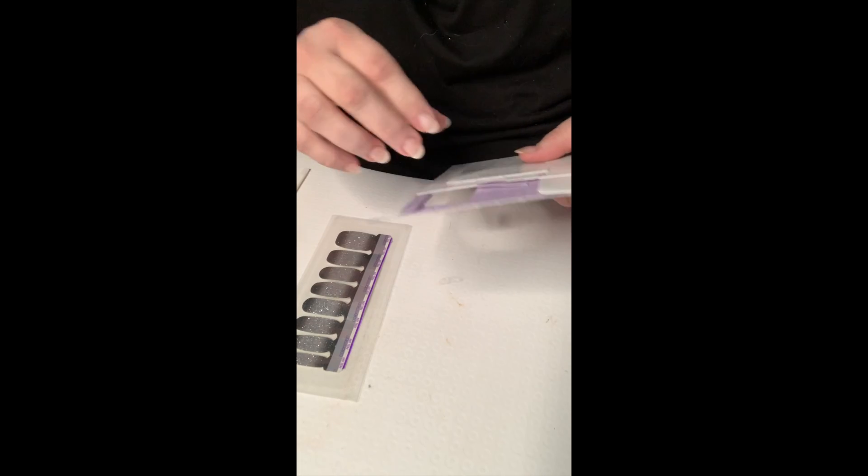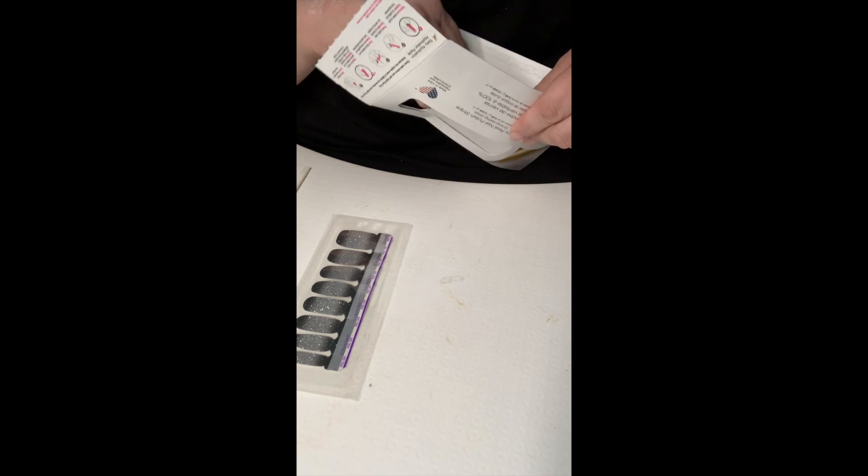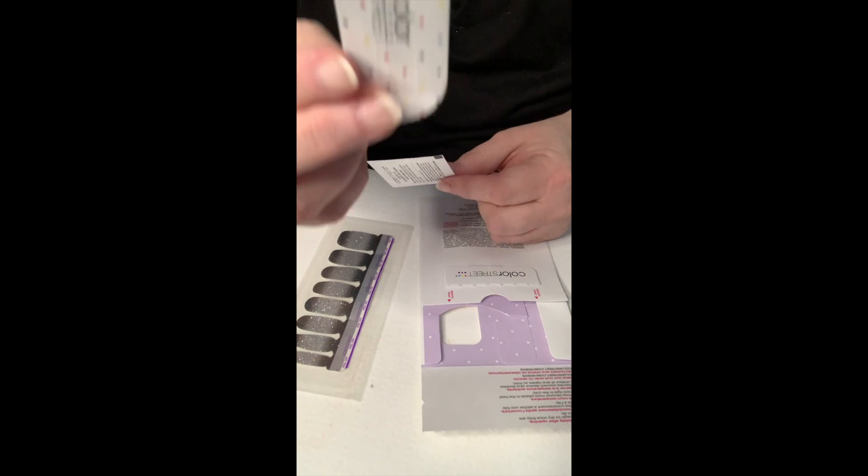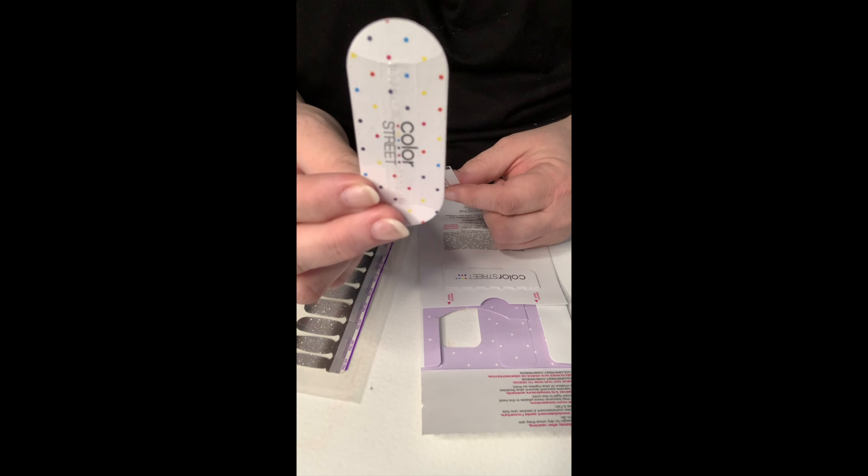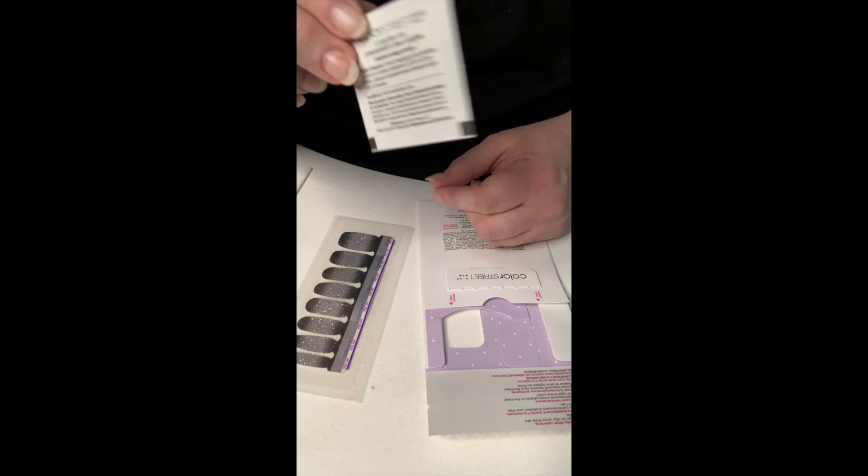Let's get started. My nails have already been prepped, so they've been filed and my cuticles pushed, and I'm ready to go. Inside my packet I received a Color Street emery board or nail file and a prep pad.